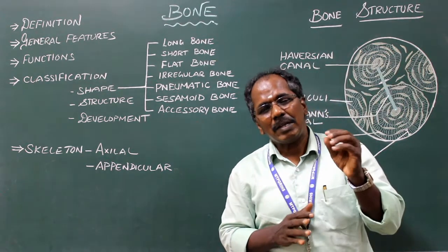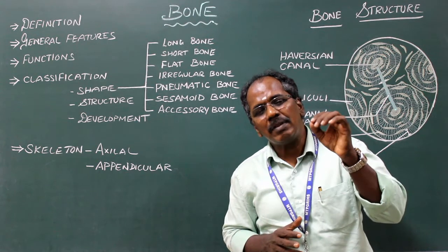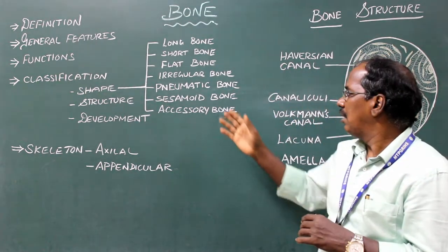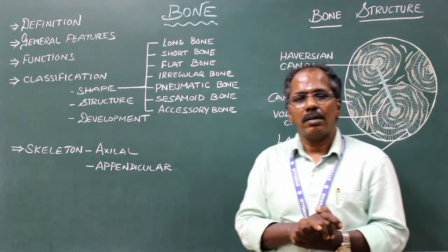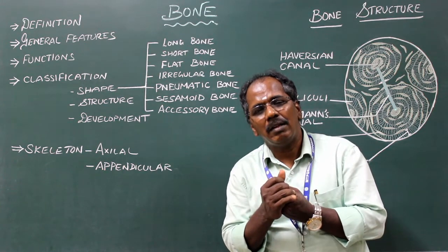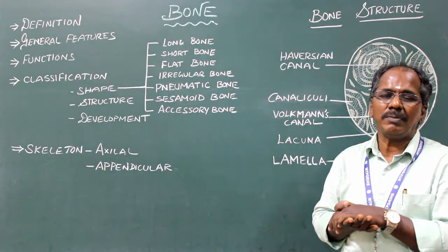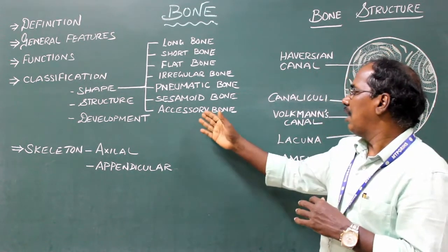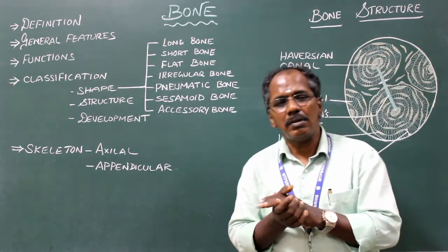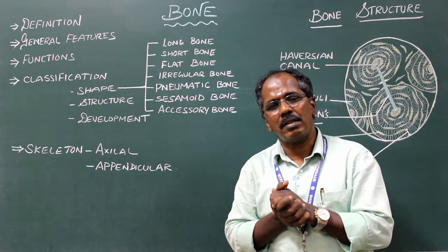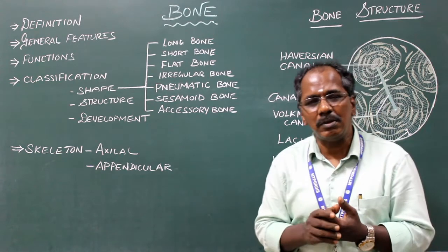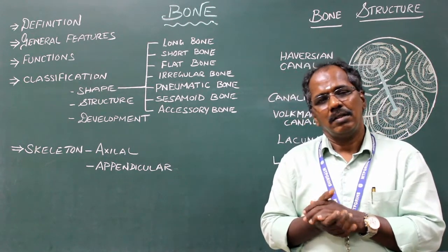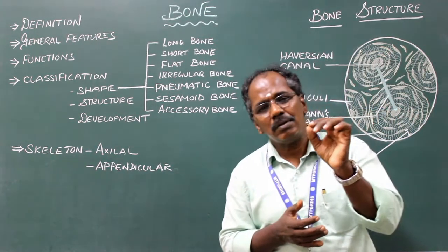Pneumatic bones contain air cavities or air-filled spaces in the bones. Examples: frontal, ethmoidal, sphenoidal and maxillary bone. Sesamoid bones are covered or enclosed by muscle, tendon or ligaments. Examples: patella, fabella, pisiform bone. Accessory bones are usually absent; in rare conditions they are present, developed due to non-fusion of secondary ossification centers. Example: Wormian bones, present in the sutures.